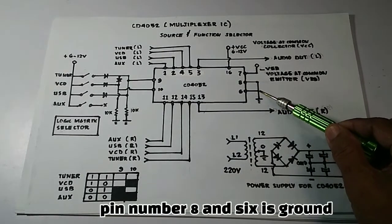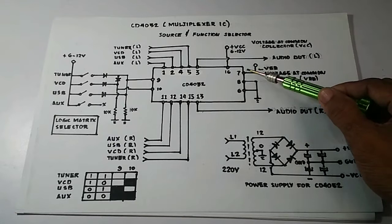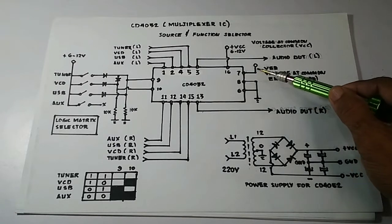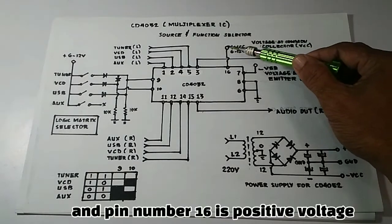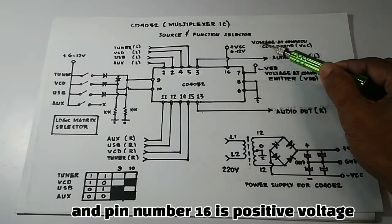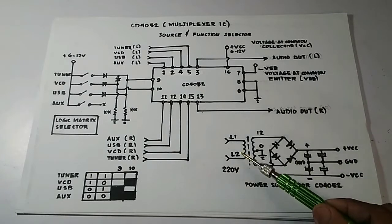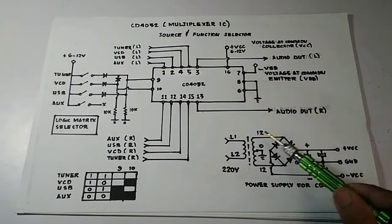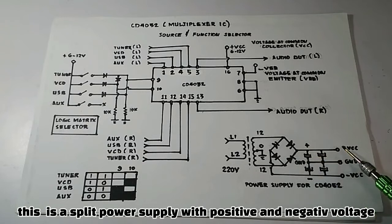Pin number 8 and 6 is ground. Pin number 7 is negative voltage. And pin number 16 is positive voltage. This is a split power supply with positive and negative voltage.